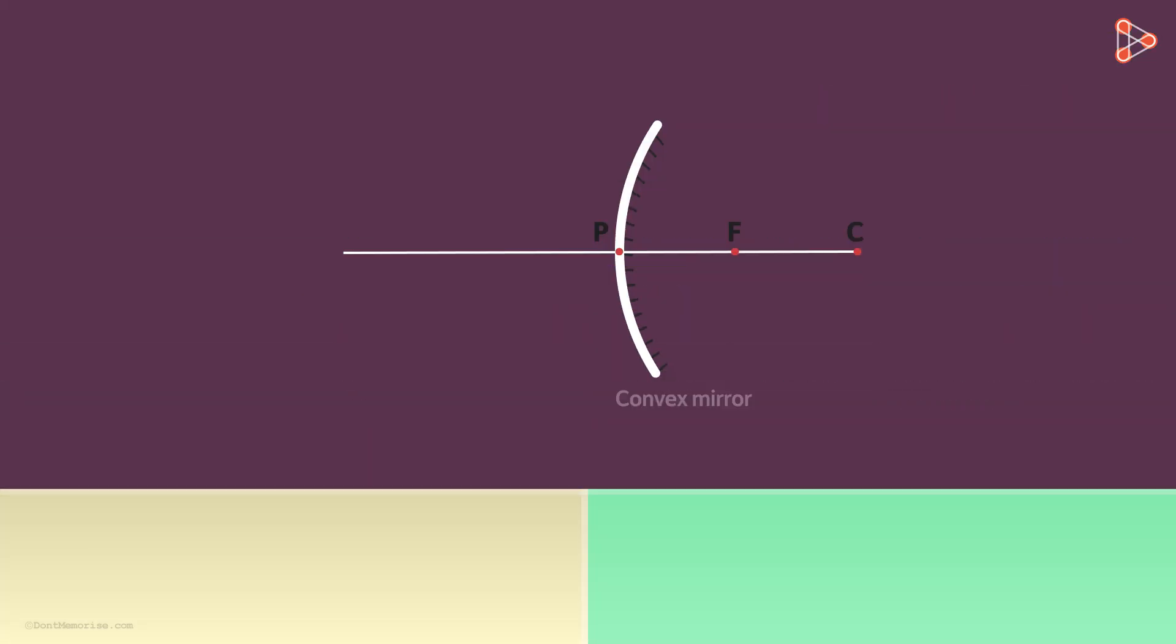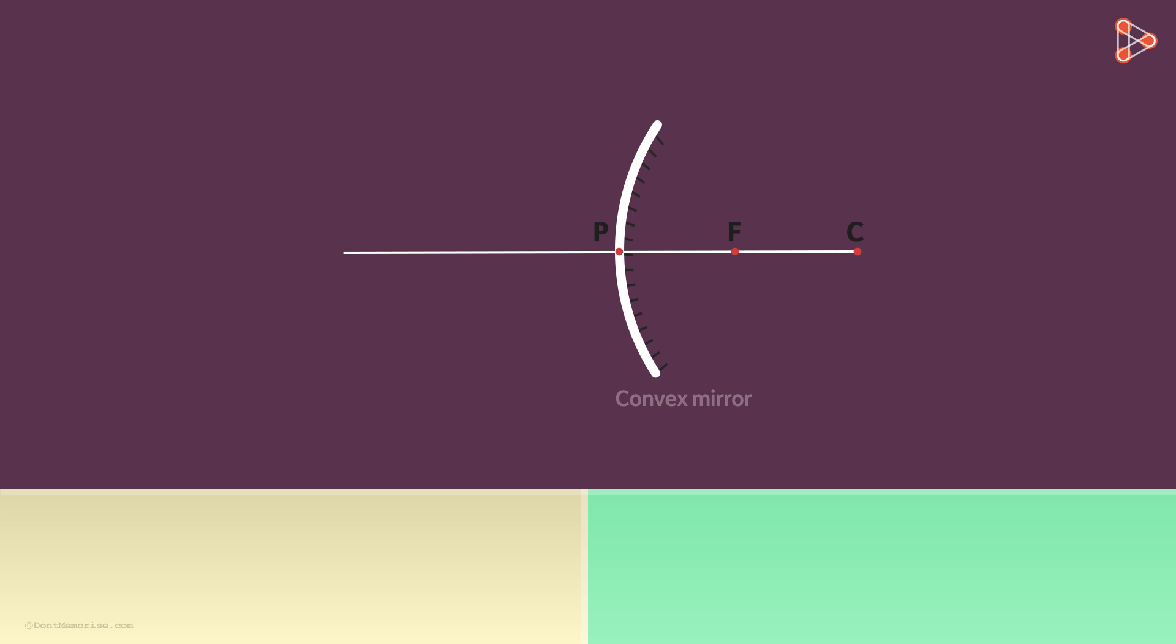But in convex mirrors, we know that the rays cannot pass through the focal point as it lies behind the mirror. But if I direct the incident ray towards the focal point, then after reflection, it travels parallel to the principal axis. Yes, any ray which is directed towards the focal point, it will travel parallel to the principal axis after reflection.